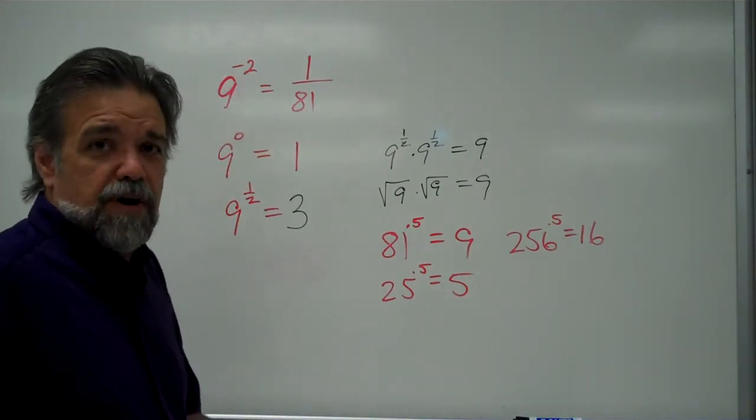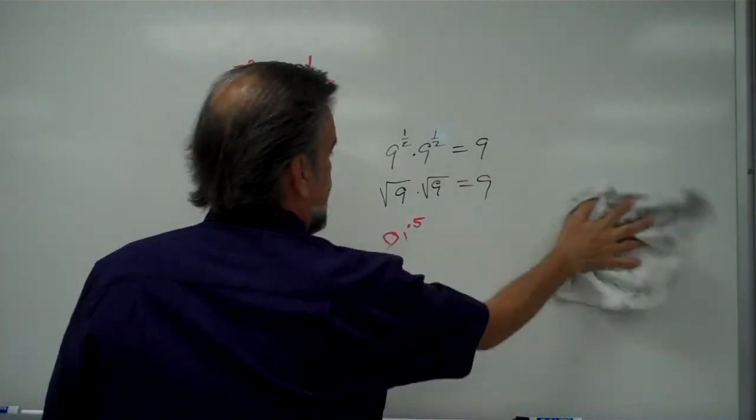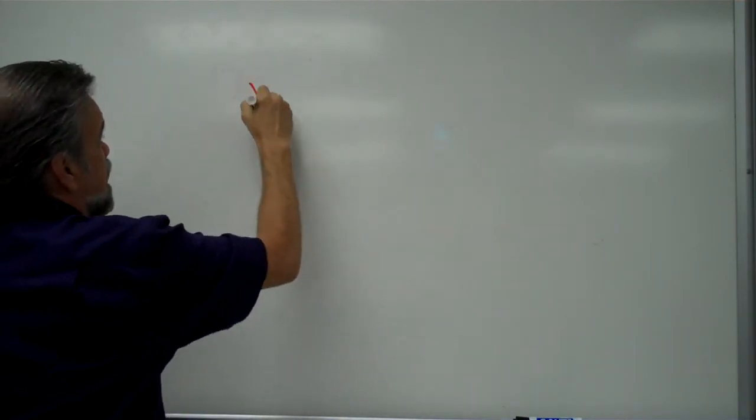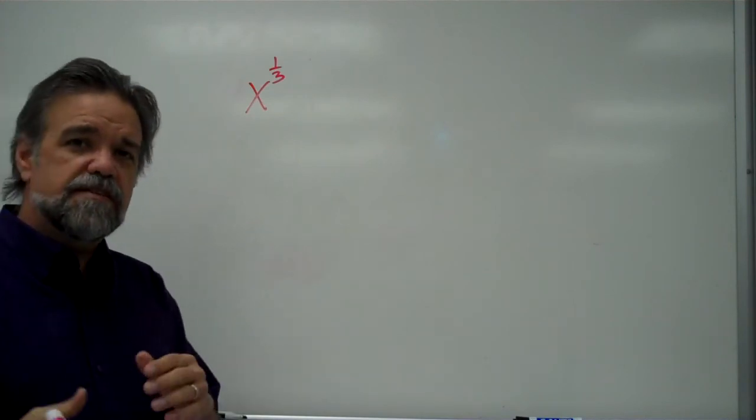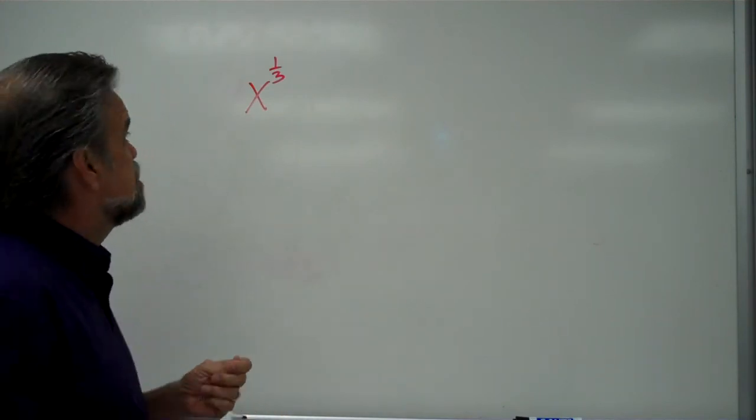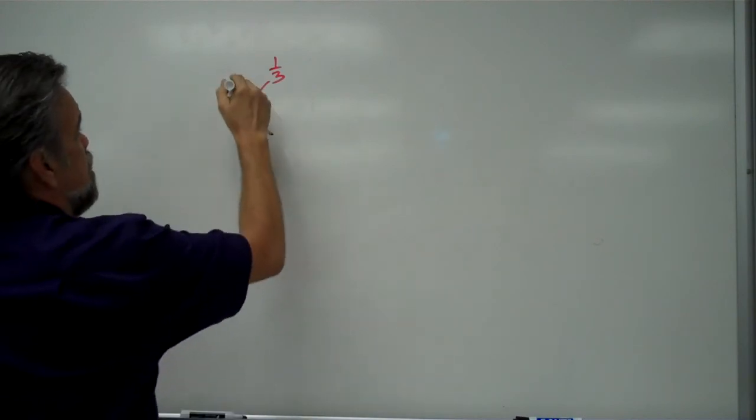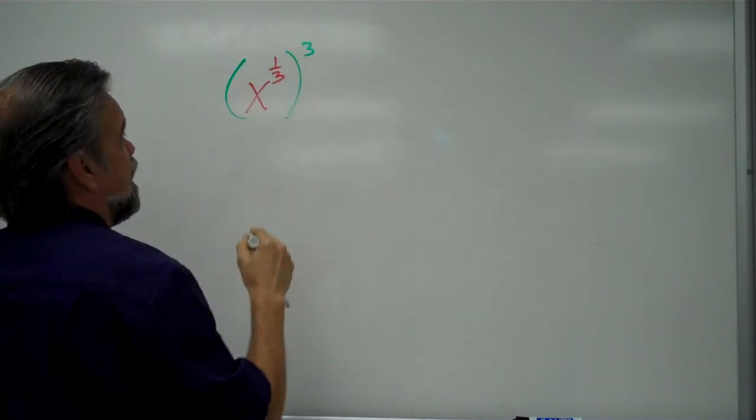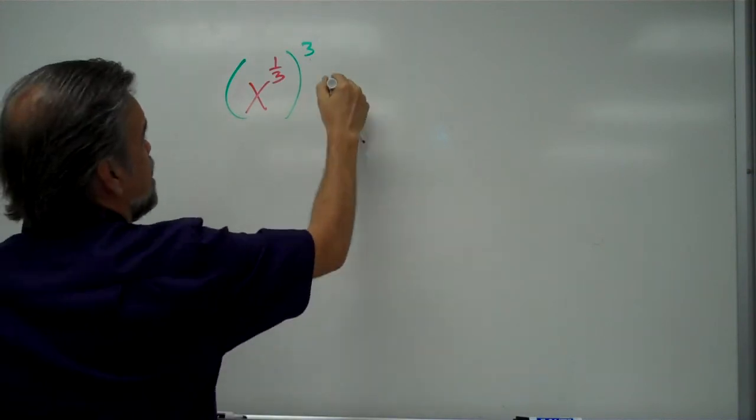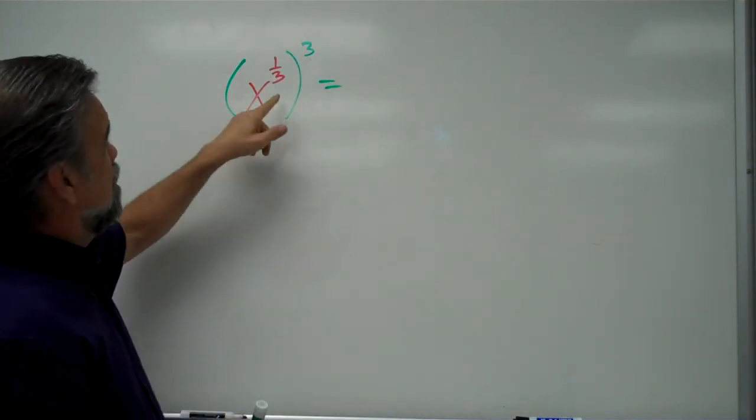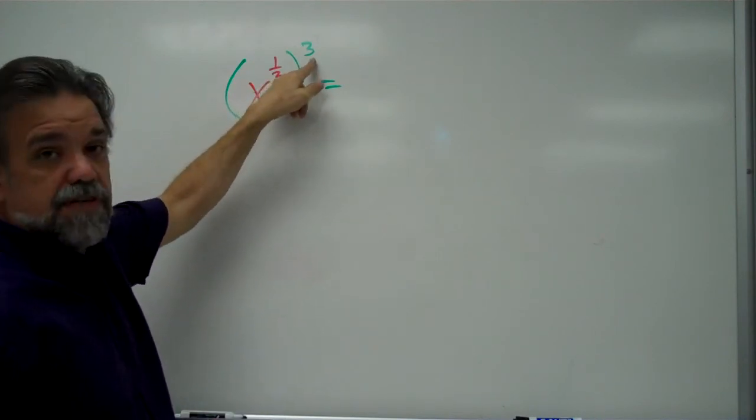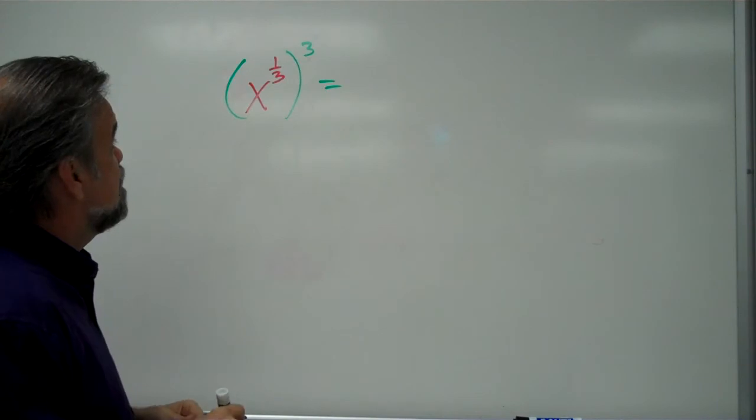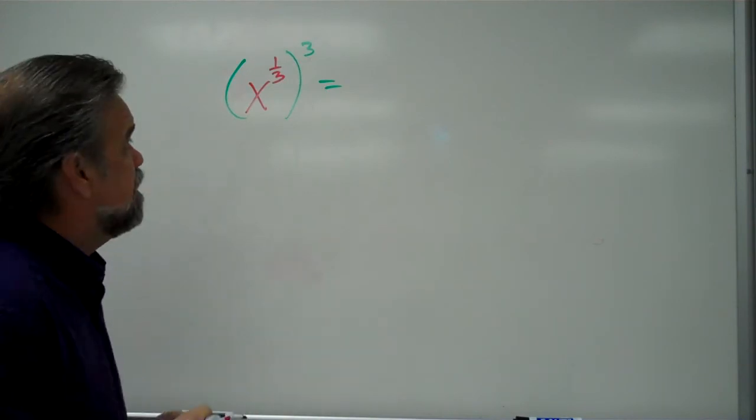1 half is not the only fraction out there, though. What if you have something to the 1 third power? What if you have x to the 1 third power? Well, again, let's think about our exponent rules. If we took this and we said, I'm going to take this thing to the third power, then what am I going to get? I'm going to multiply those two exponents. I learned that in the last video. And 1 third times 3 is just 1. And so that means I'm going to have x to the 1 power, which is just x again.